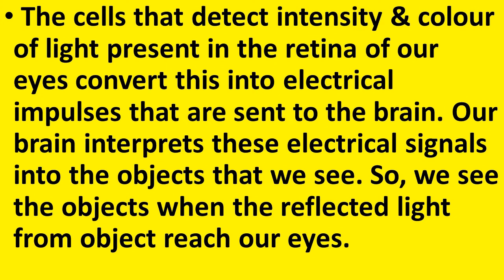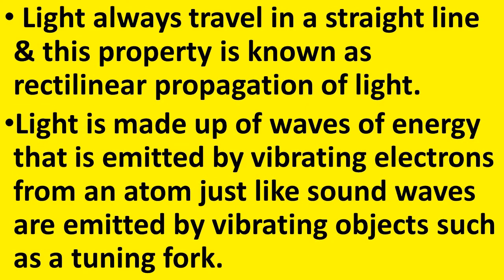Inside our eyes, in the retina, there are cells that can detect the intensity and color of light, and these cells convert this into electrical impulses sent to the brain. Our brain interprets these electrical signals and we see the objects. Light always travels in a straight line, and this property is known as rectilinear propagation of light.